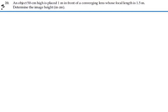Here's problem 3620. An object 50 centimeters high is placed one meter in front of a converging lens whose focal length is 1.5 meters.